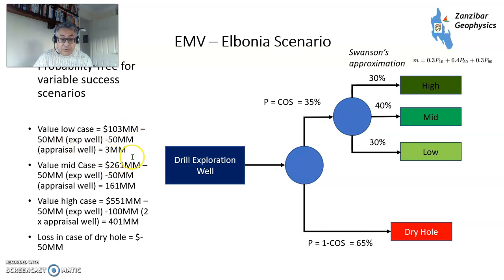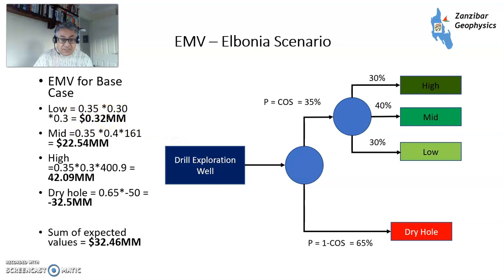The respective values are: the low case — one exploration well plus one appraisal well — is only $3 million, fairly marginal. The mid case is $161 million as before. The high case is $401 million. The loss in a dry hole case is minus $50 million. Multiplying all of these out, we get $0.32 million for the low case, $22.54 million for the mid case, $42.09 million for the high case, and minus $32 million for the dry hole. Summing all of that gives an expected monetary value of $32.46 million — higher than the single-case result because it's skewed by the very valuable high case. So you may want to do more geological work to assess how likely the high case really is before drilling.